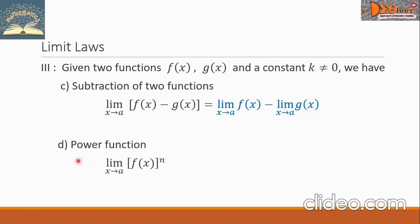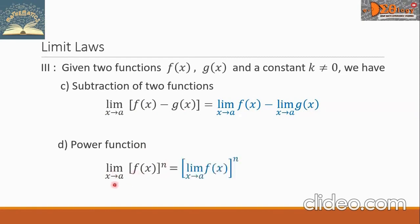Letter D — the power function. We have the limit as x approaches A of f of x raised to a power n. To simplify this, we take the limit of the function as x approaches A and then take the power of that limit. So the limit of f of x as x approaches A is taken first, then the power n is applied outside.